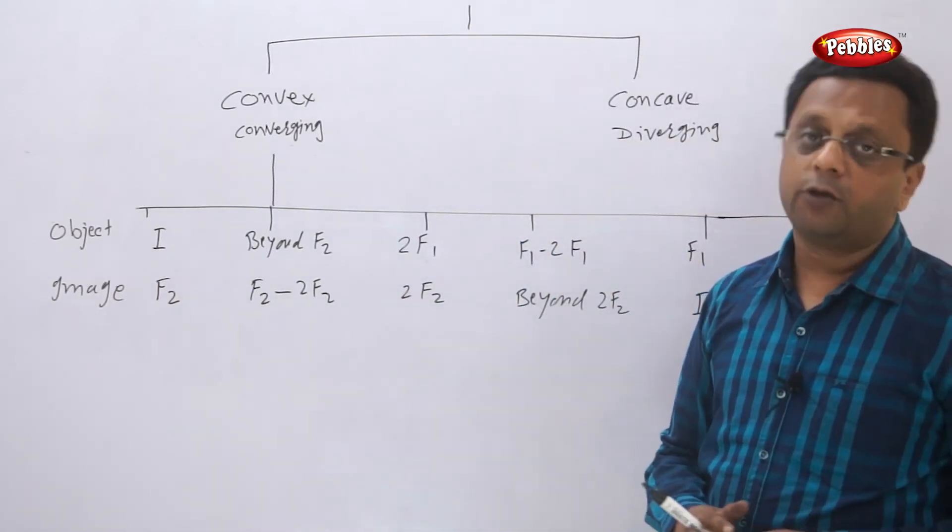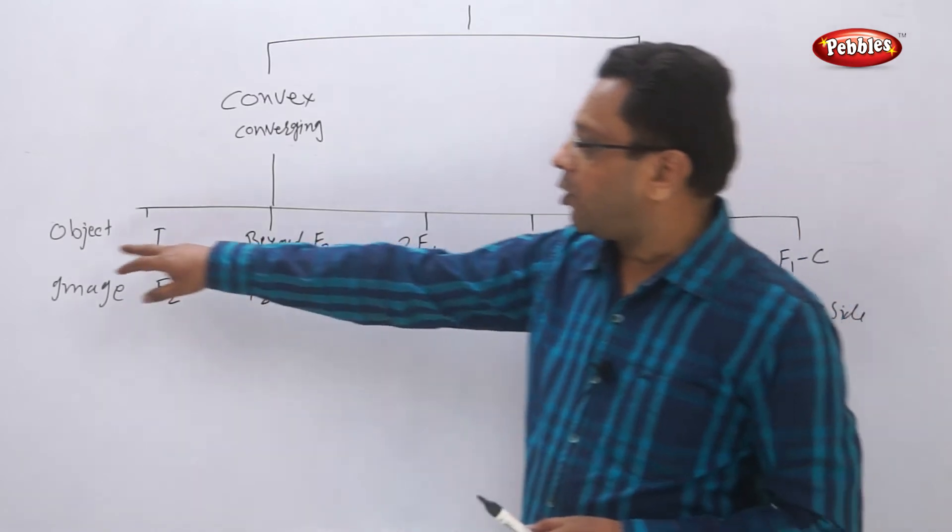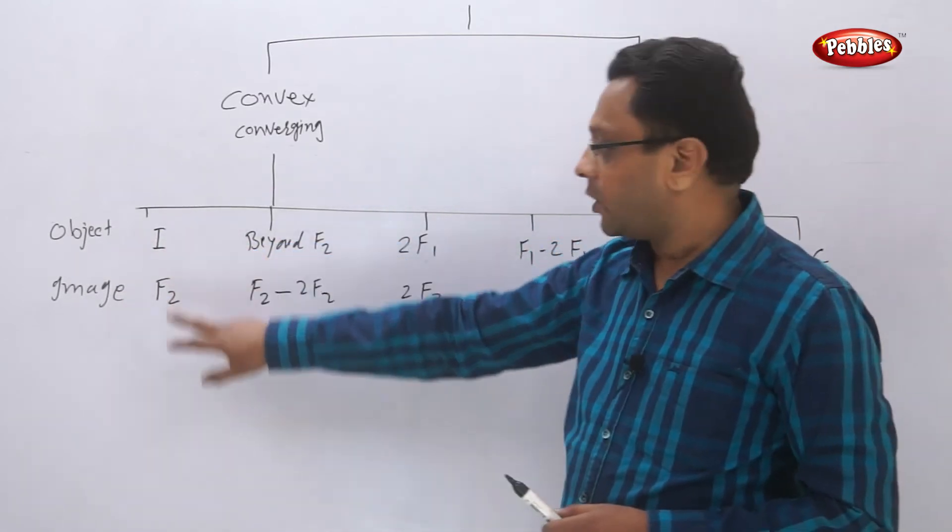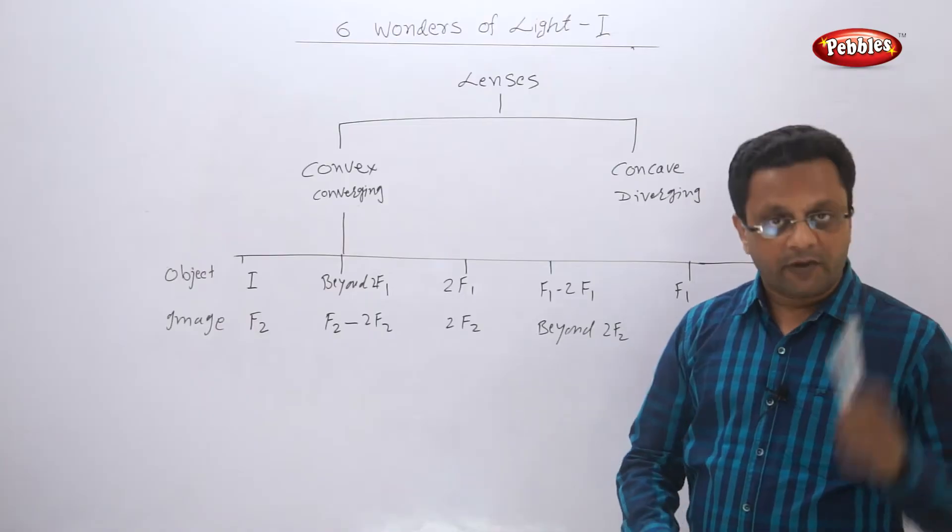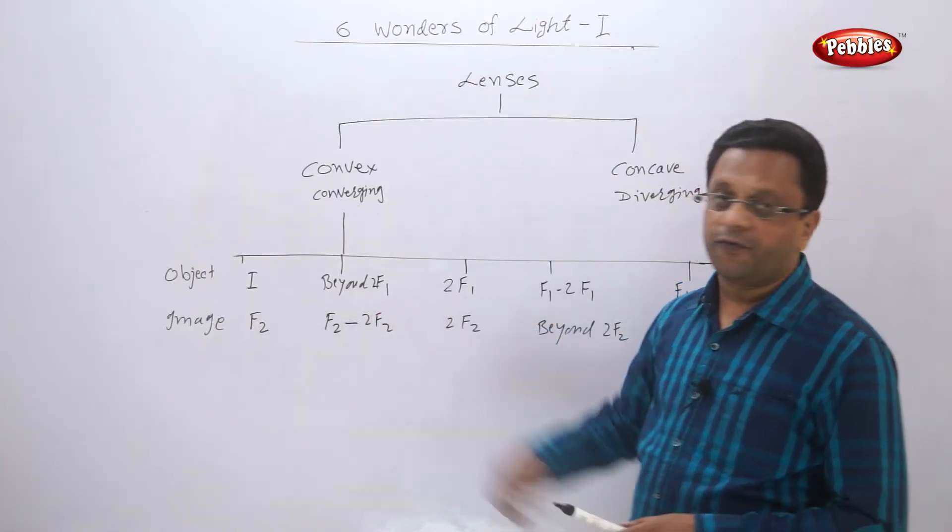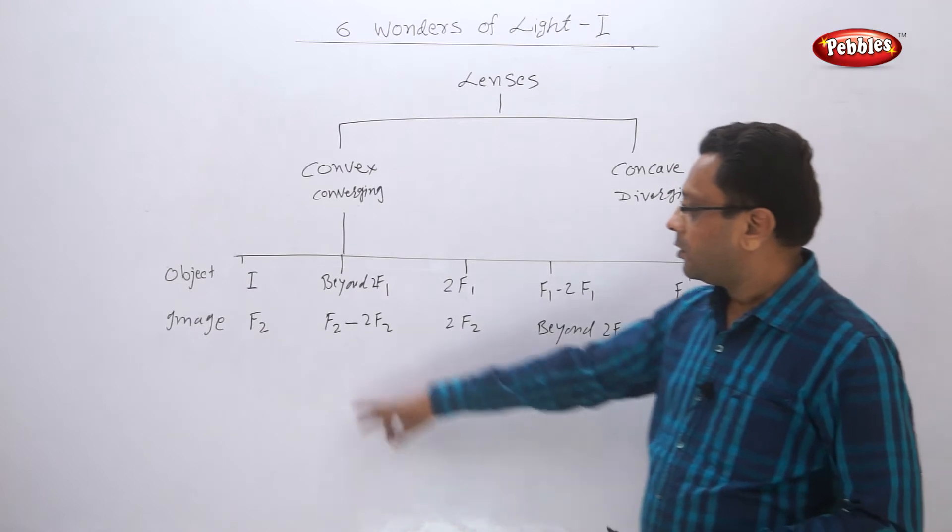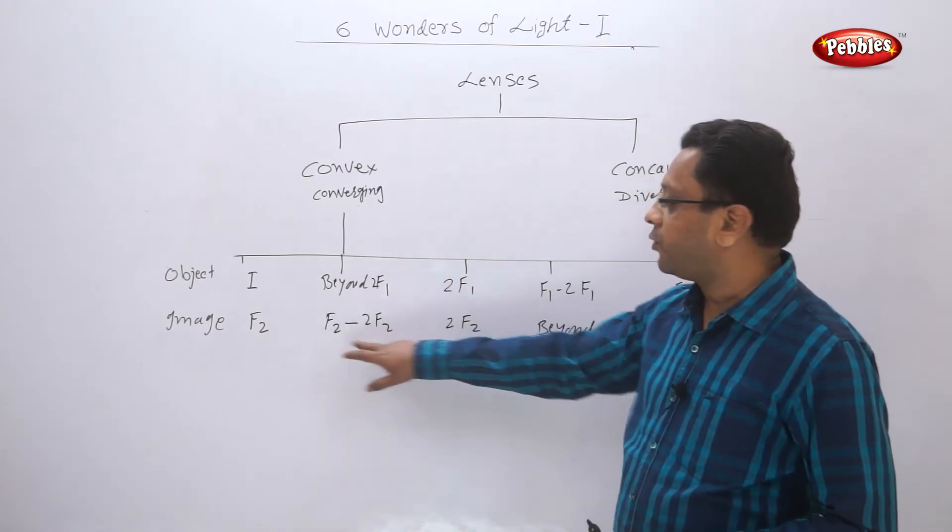We have seen these in detail in those diagrams. Whenever your object is at infinity, the image is at F2. Whenever the object is beyond 2F1, that is between infinity and 2F1, the image you get is between F2 and 2F2.